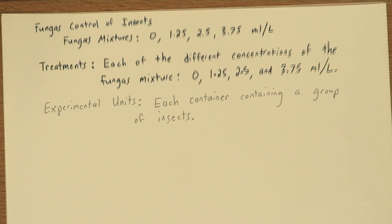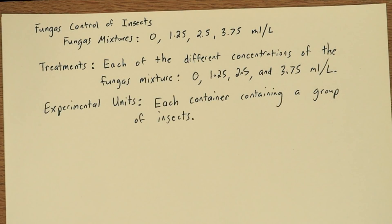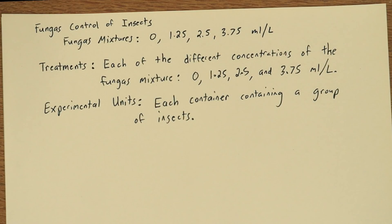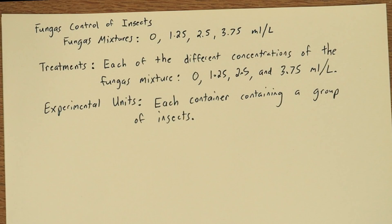The experimental units are each container containing a group of insects. Be careful here — some students will think the experimental units are each of the insects, but an experimental unit is what the treatment is actually applied to. So if a container has lots of insects in it and that one container gets one treatment, then that container would be the experimental unit.